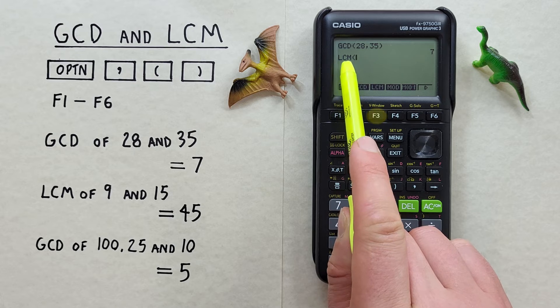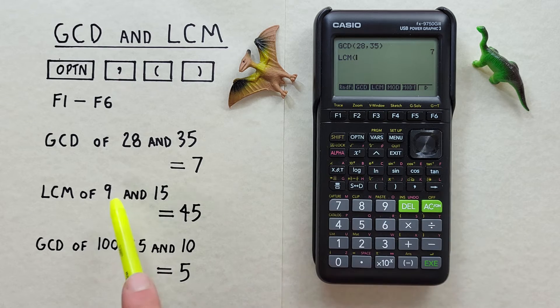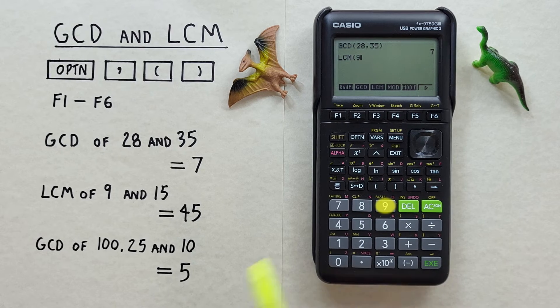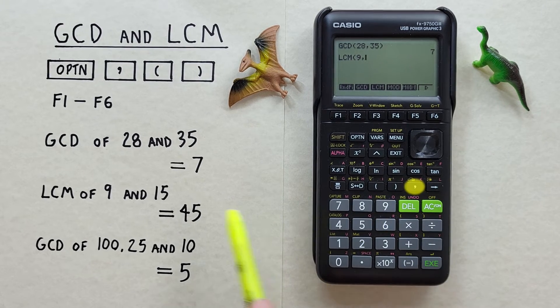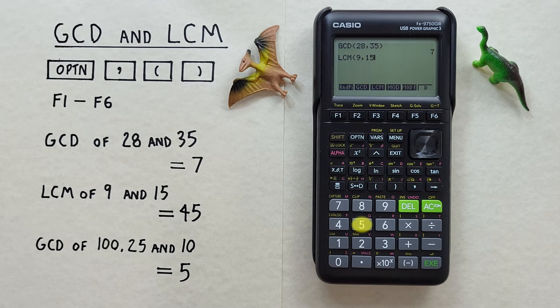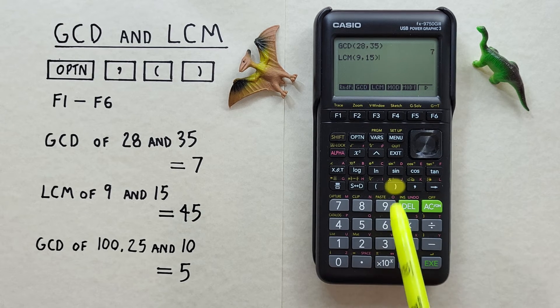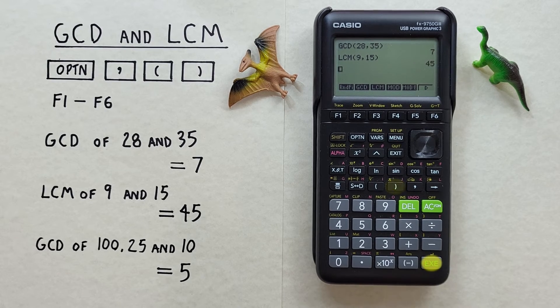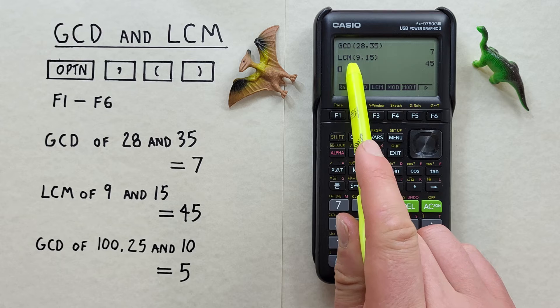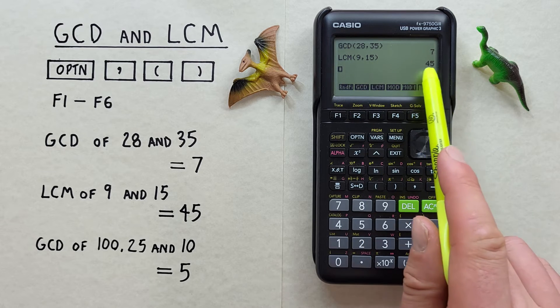we see LCM with our open bracket, and we can enter our first number, which was 9, then a comma, our second number, which was 15, and close our bracket and hit EXE. And there we go. The LCM, or least common multiple, of 9 and 15 is 45.